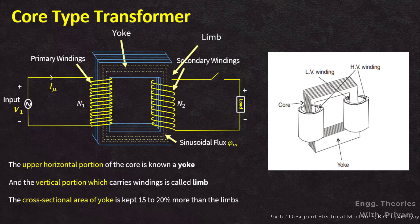Usually, the cross-sectional area of the yoke is kept 15–20% more than the limbs, because it reduces the flux density and consequently reduces the iron losses. Usually, the windings of the coils used in this type of transformer are preformed and are of cylindrical type.